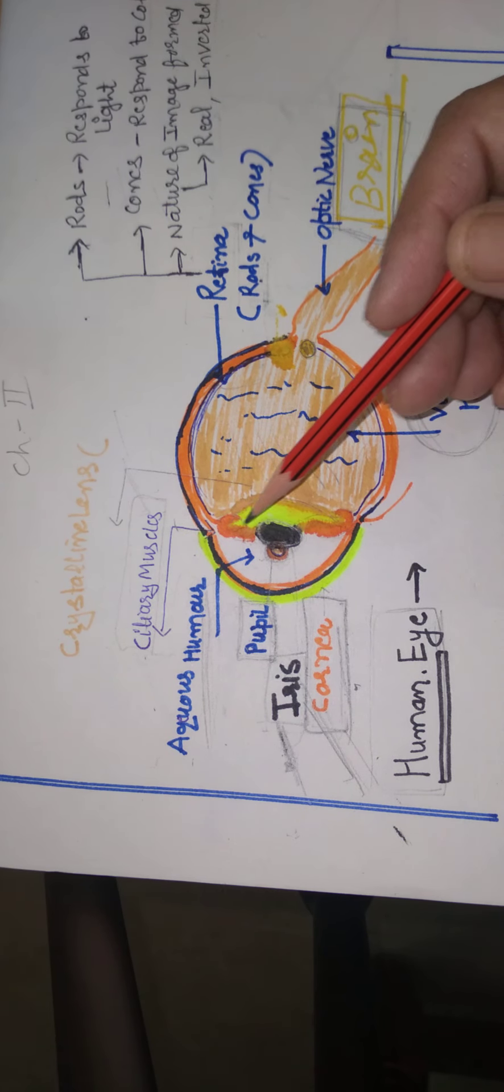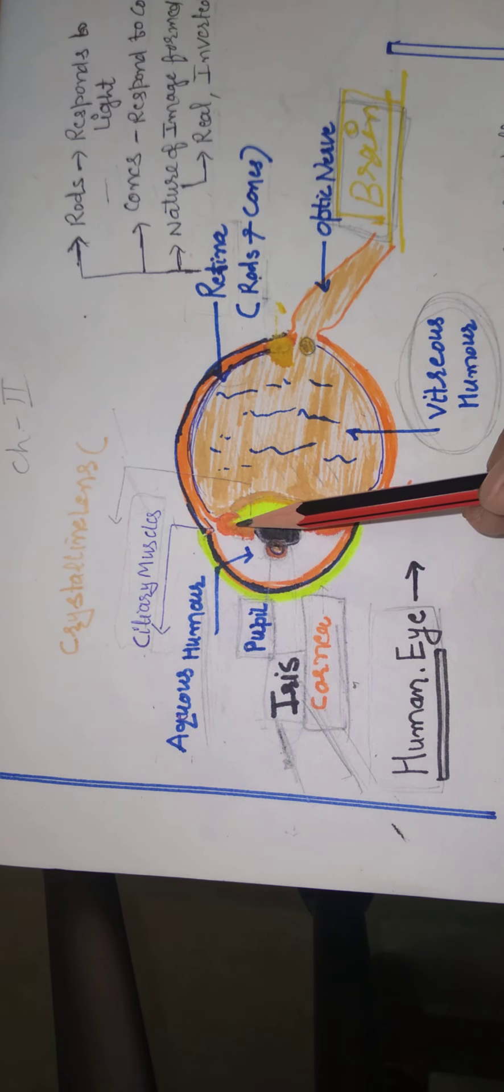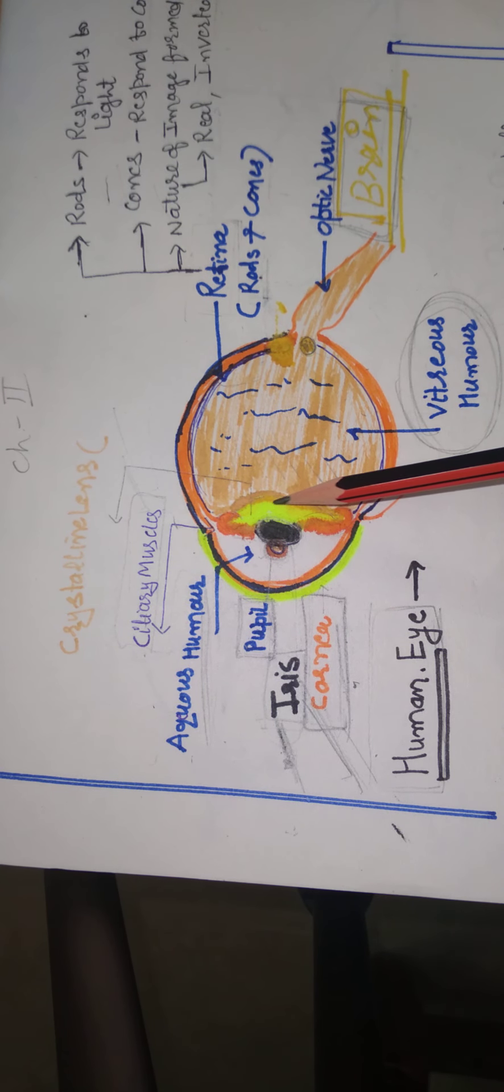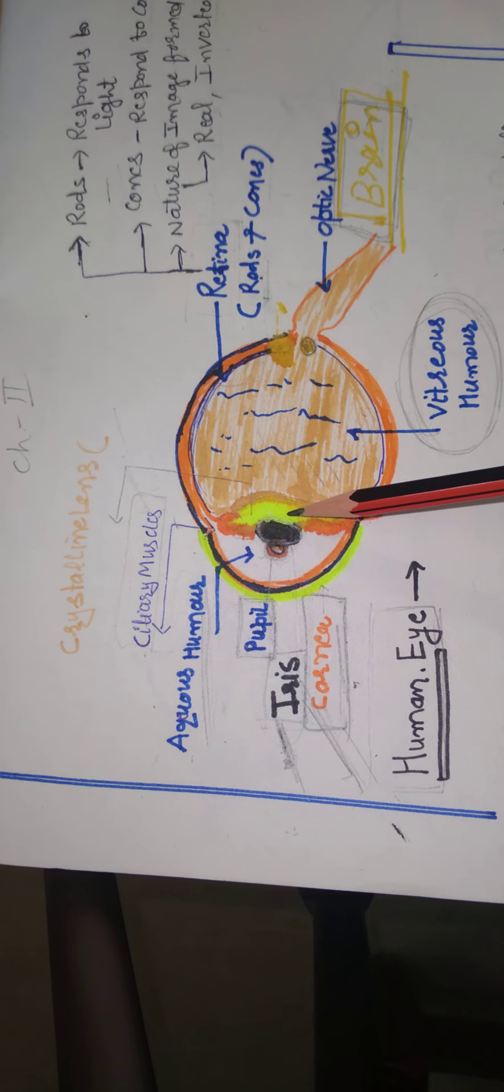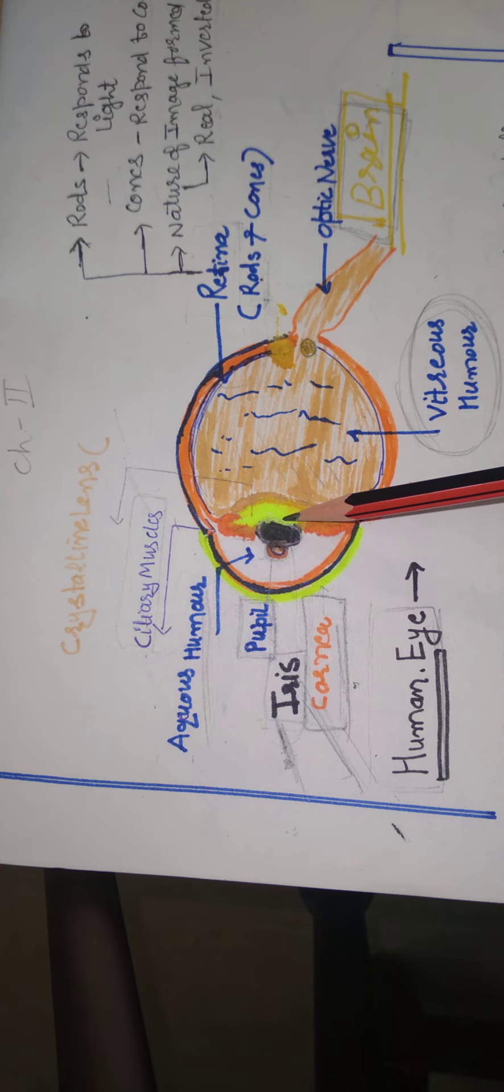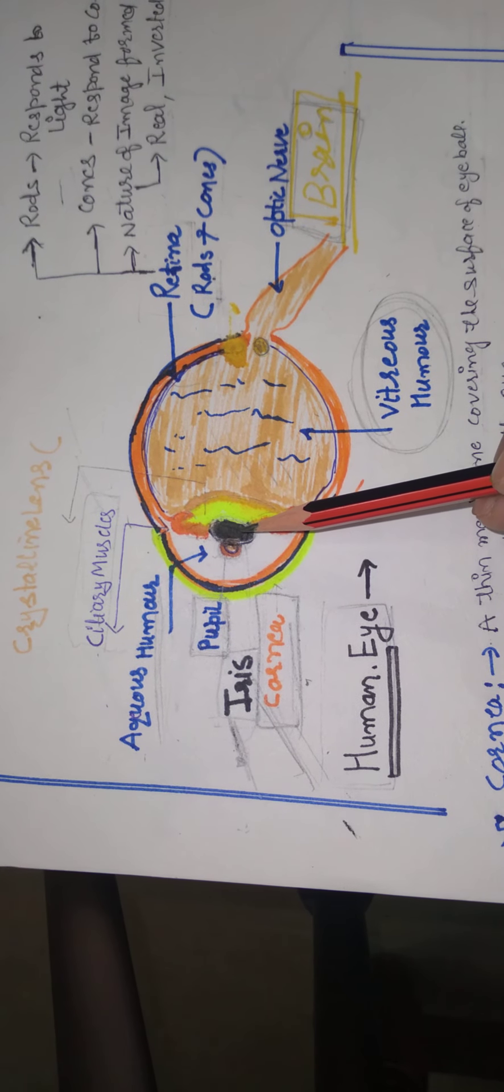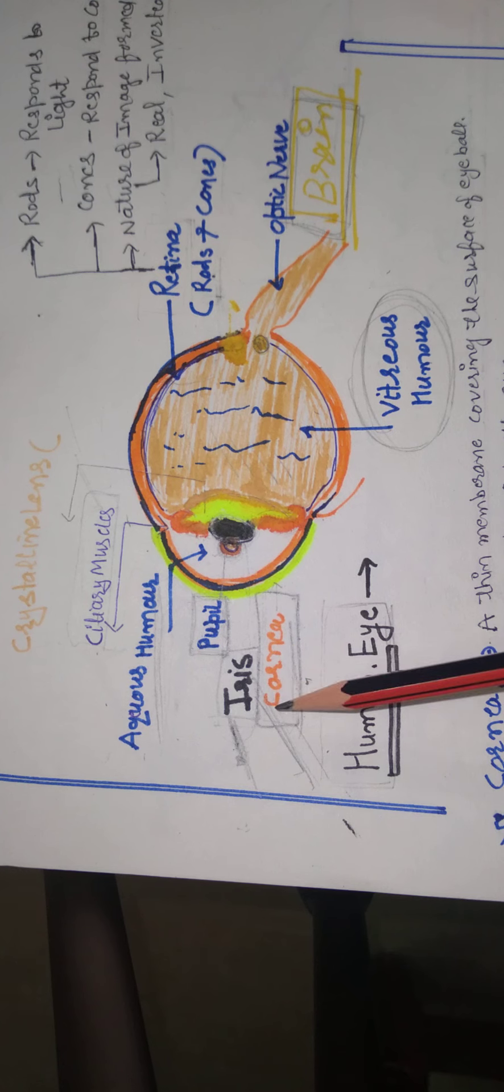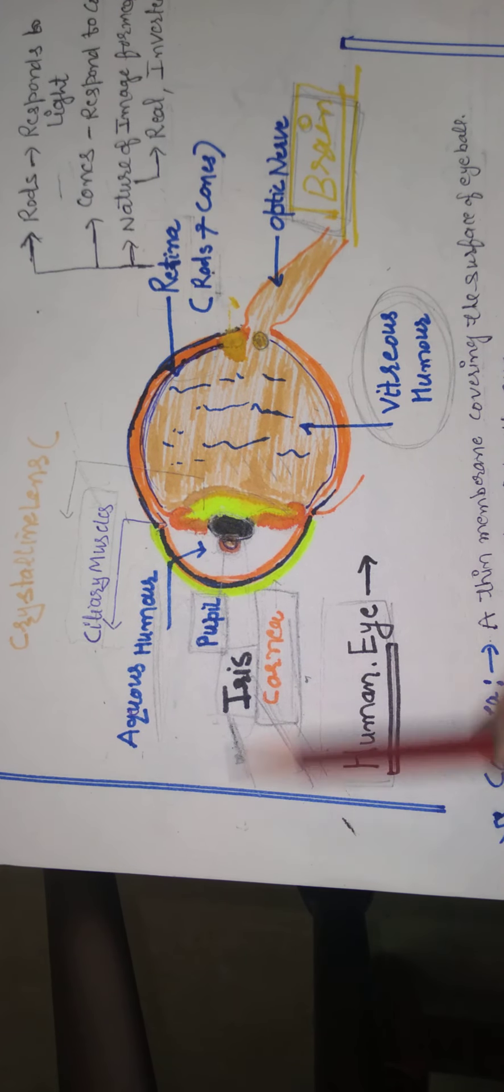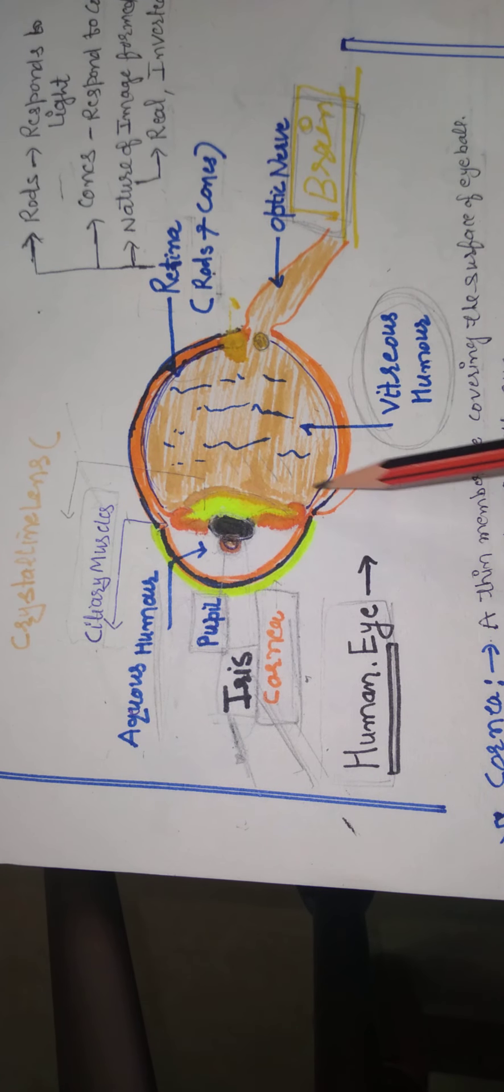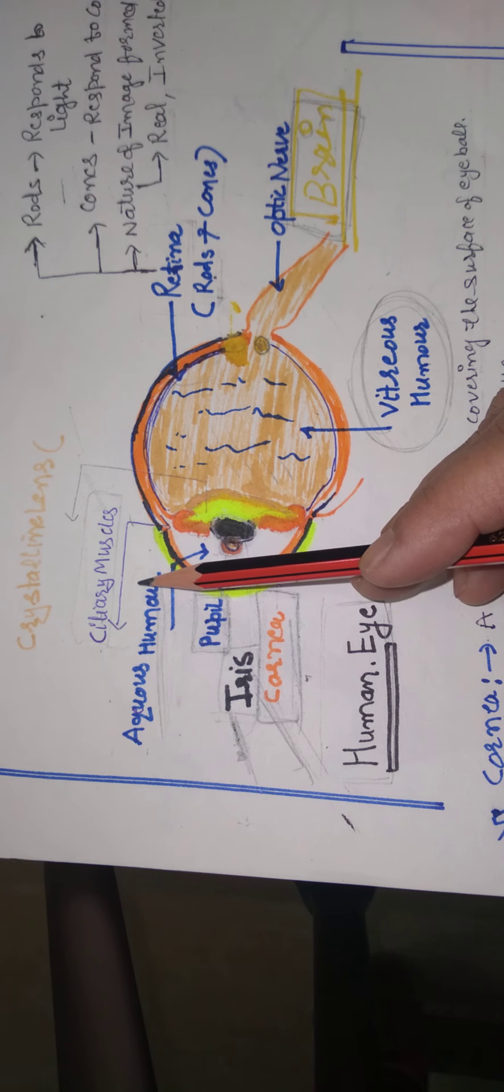Then the next most important point is ciliary muscles. Ciliary muscles hold the eye lens. Eye lens जो है उसकी focal length adjust हो जाती है according to the distance of the object. If we want to focus on object which are at very far off places then eye lens की focal length जो है वो increase हो जाती है with the help of ciliary muscles.